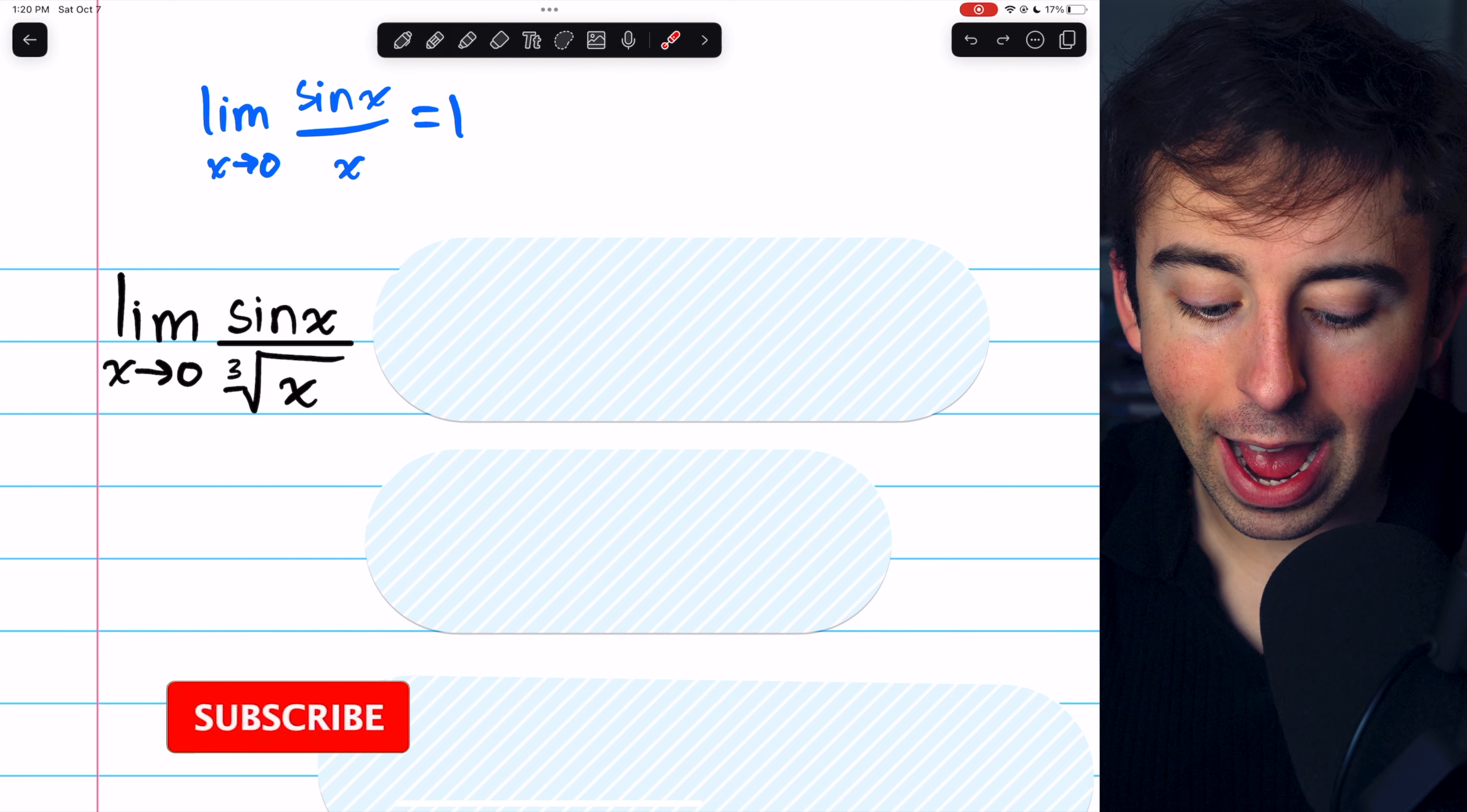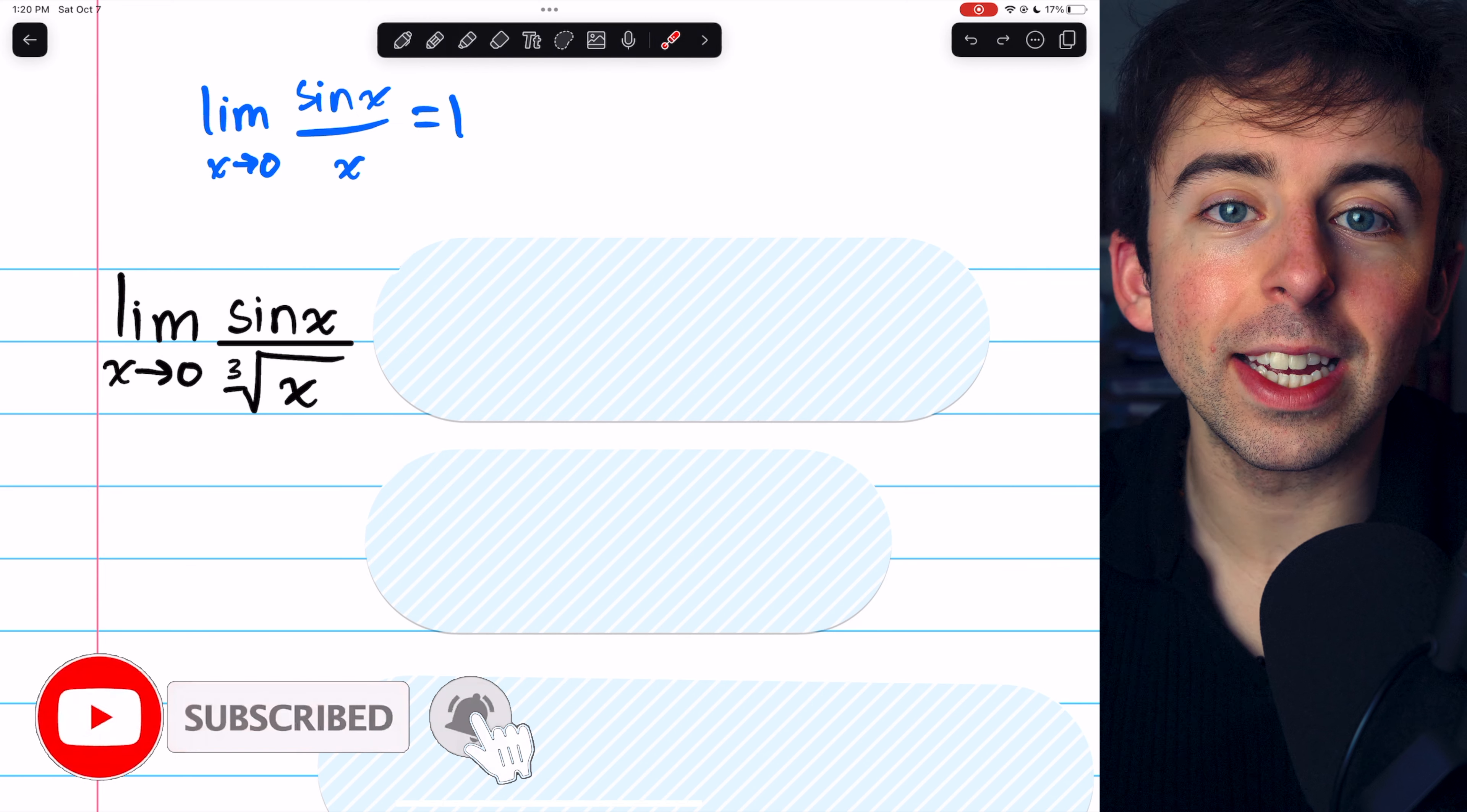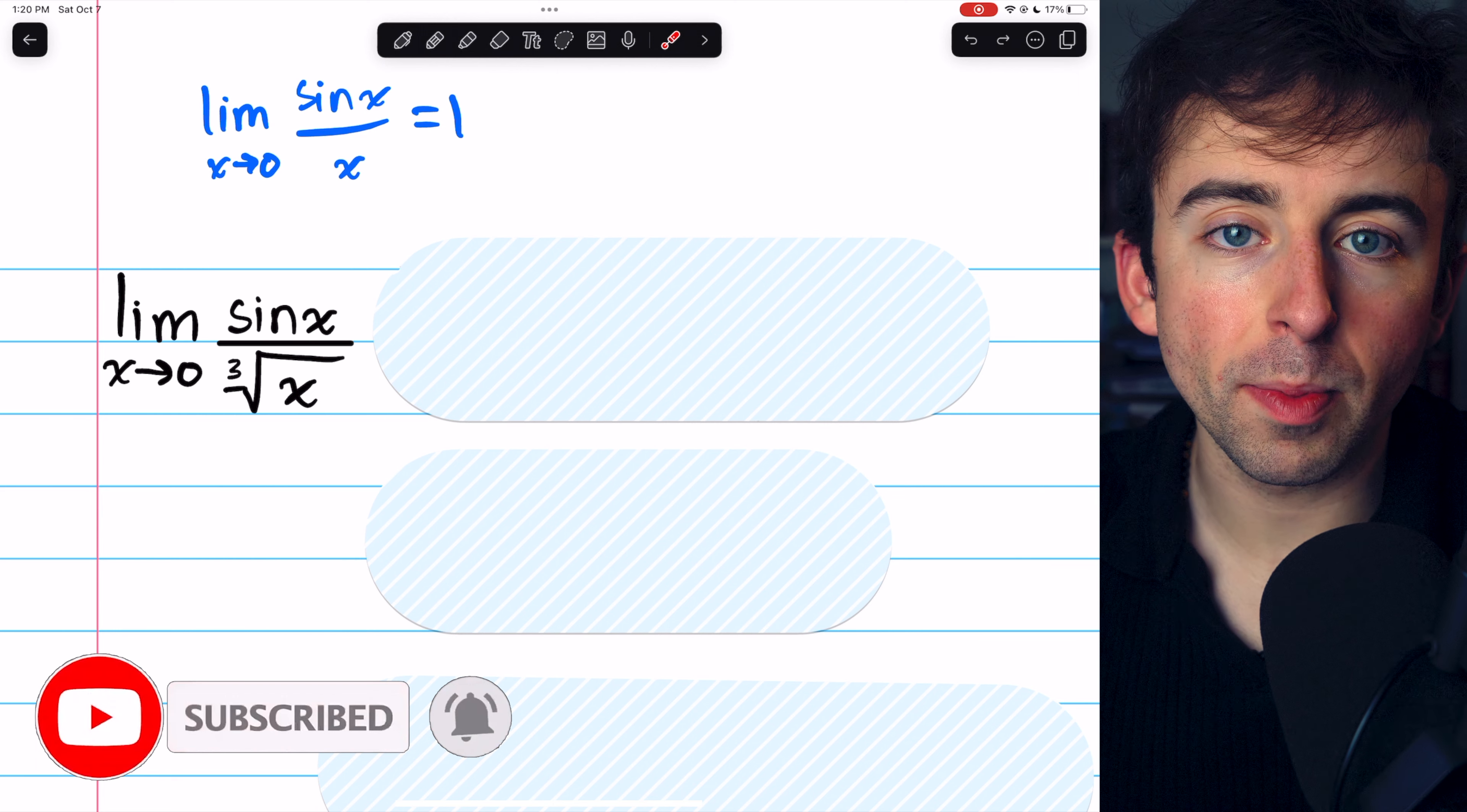Remember that the limit of sine x over x as x approaches 0 is 1. Link in the description to my lesson proving that.